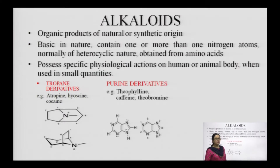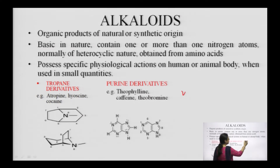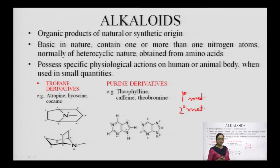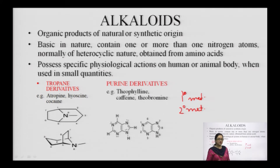First I will discuss about what alkaloids are. There are two types of metabolites present in plants: primary metabolites and secondary metabolites. Primary metabolites are required for the proper growth of plants, whereas secondary metabolites play a very important role in the defense mechanism of plants. Alkaloids are in the category of plant secondary metabolites.